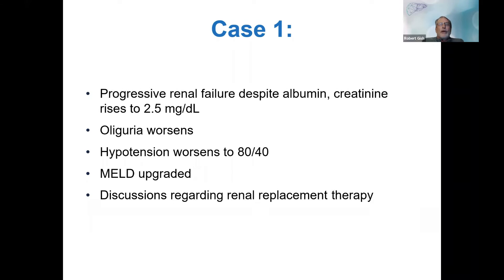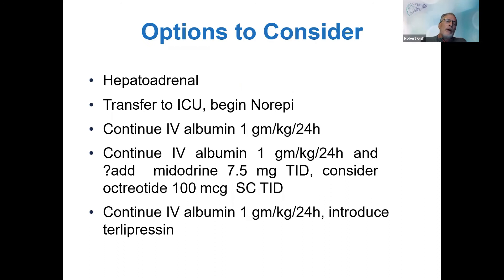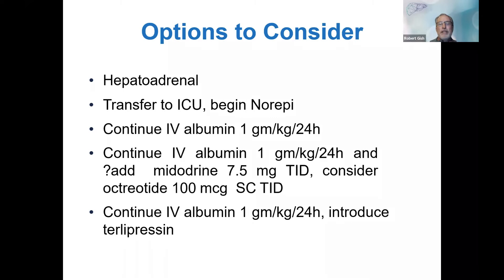When a patient has progressive renal failure, has been given albumin, creatinine is now 2.5, urine output is falling, blood pressure has fallen to 80 systolic — MELD score is upgraded and you've called nephrology. In these patients, you should only be using CVVH; they should not be getting standard dialysis. Regarding hepatoadrenal syndrome: this involves getting a cortisol level, cortisol binding globulin, free cortisol, and a cosyntropin stimulation test. Hepatoadrenal syndrome is diagnosed in a patient with systolic BP less than 90 who is on pressors — after giving 80mg solu-cortef three times a day for three days. If it fixes it, they were likely adrenal insufficient.